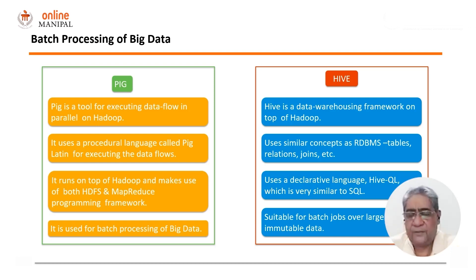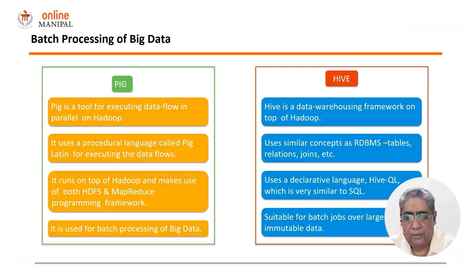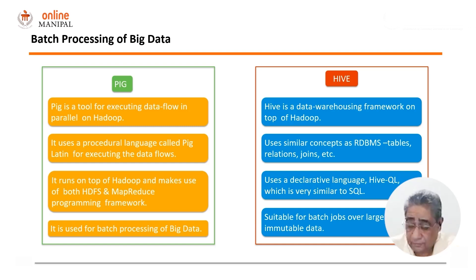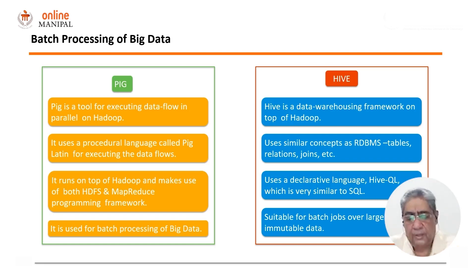PIG is primarily used as an ETL tool where we can do the necessary transformation of data before pushing it into the Hive framework. In the Aadhaar project, the ETL aspects of the data were handled by PIG. Once the transformation of data was completed using the necessary business logic in PIG, the data was pushed into a data warehousing framework built with Hive. From Hive, using HiveQL, we created datasets that were moved into a data mart built using MySQL.